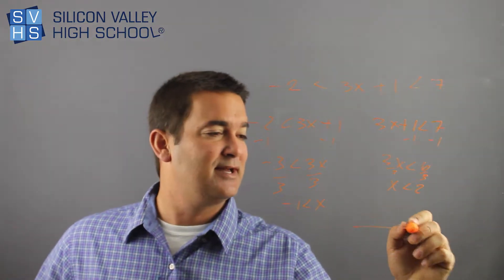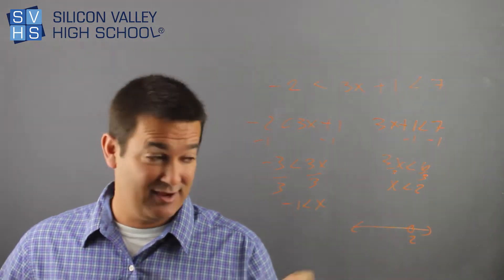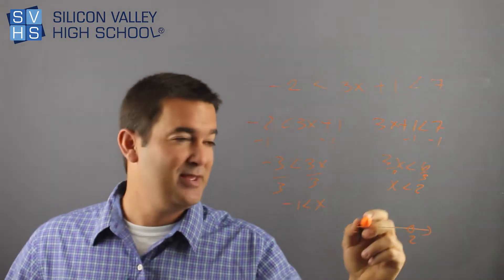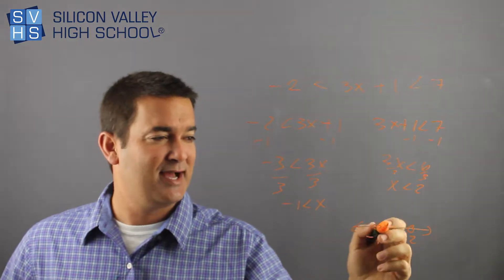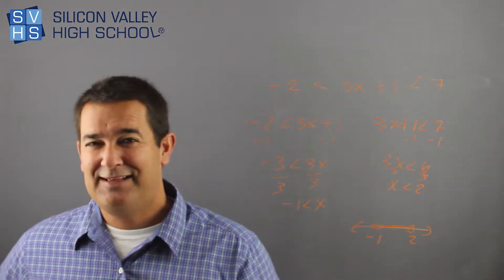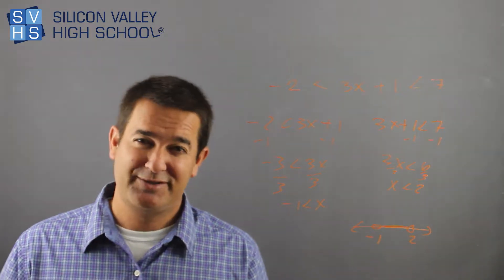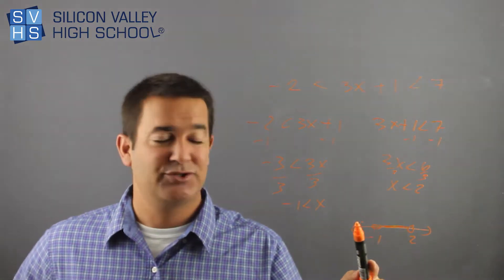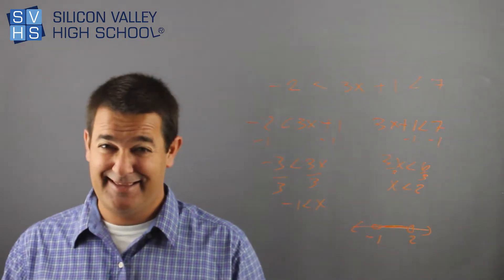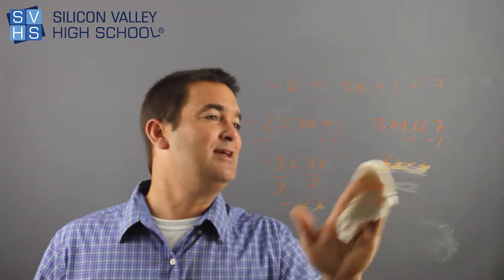If you were to graph this, it would look like this. You have two, open dot, open circle, not closed because it's not also equal to. It's less than two and it's greater than negative one, so here's your negative one sign, it's in here. This gets a little confusing. There's a concept where the answers are either and or or, and this would be an and, because the answers are true to both this and this. I'll show you another example where there's an or.